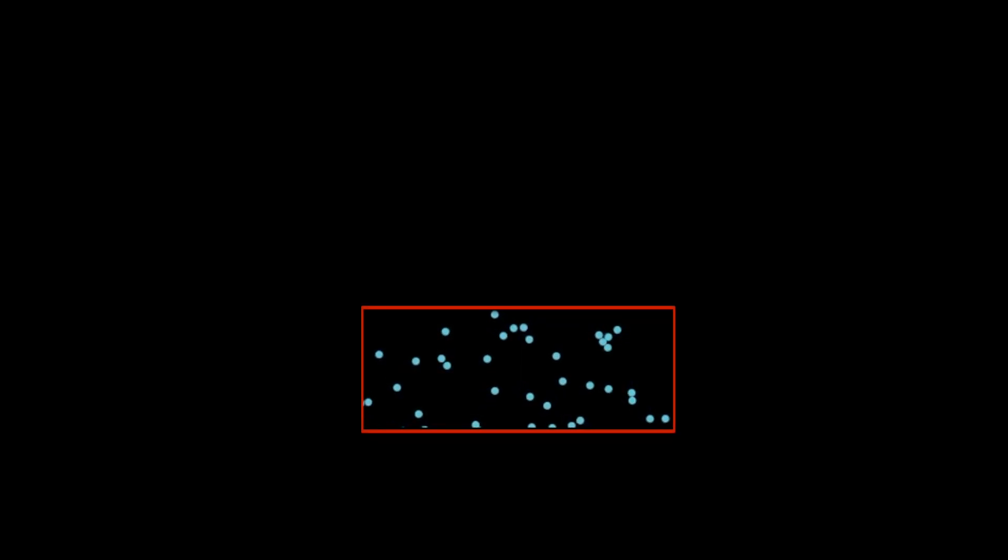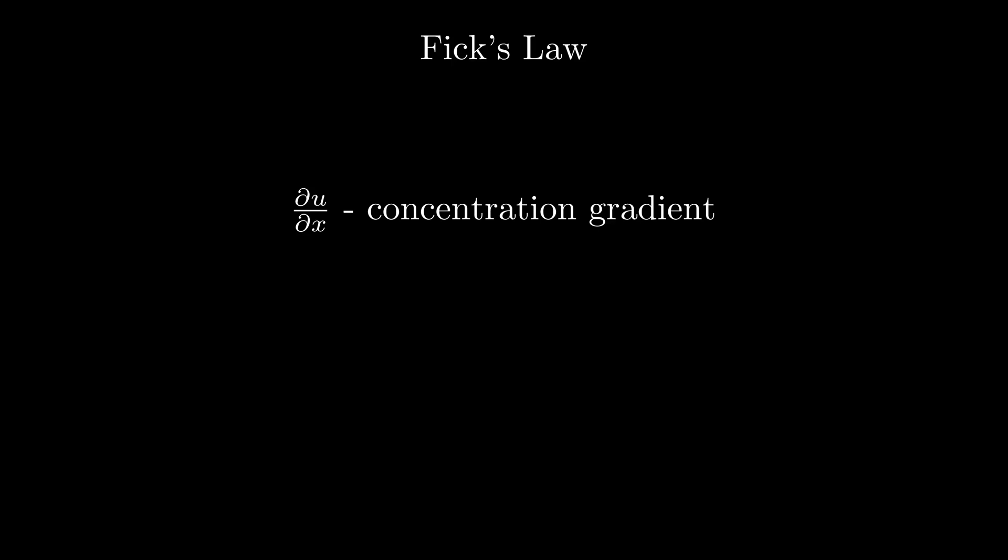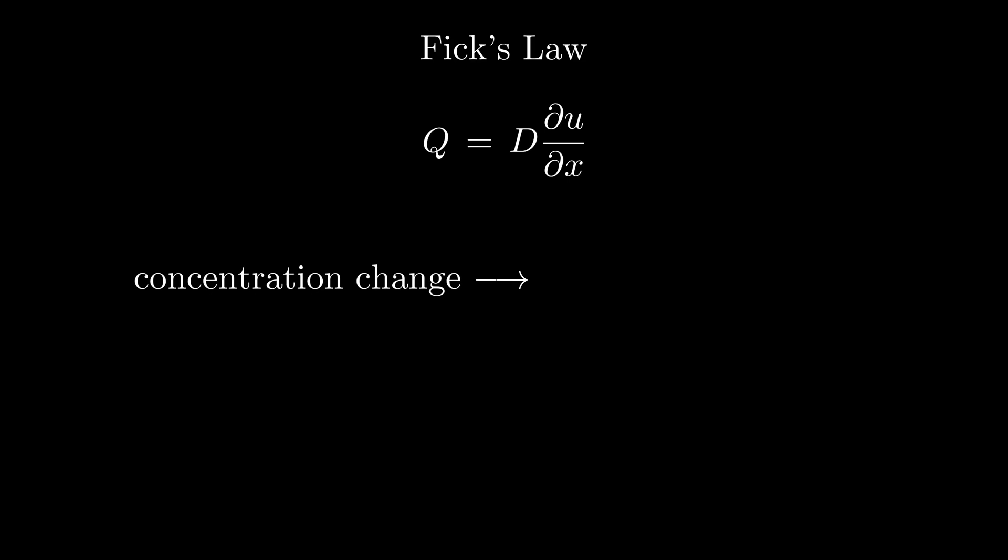Now, what if we consider how concentration changes along our container, so with respect to the x variable? This is captured by the partial derivative with respect to x. Fick's law is an empirical postulate which states that this quantity, called the concentration gradient, is actually proportional to the flux. And it kind of makes sense. The bigger the concentration change is at a point, the bigger the mass change is at that point, and thus more mass flows, or rather, fluxes through that point.